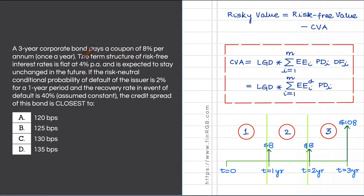So in the future also, our interest rate term structure will stay flat at 4% per annum. The risk-neutral conditional probability of default of the issuer is given to be 2% for a one-year period, and the recovery rate in the event of default is given to be 40%, assumed to be constant over the life of this bond.